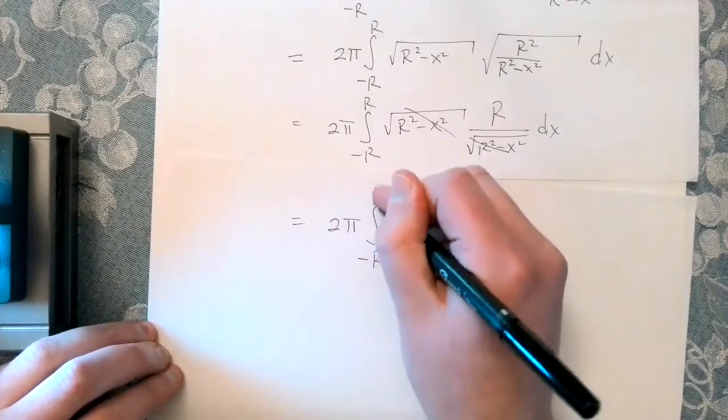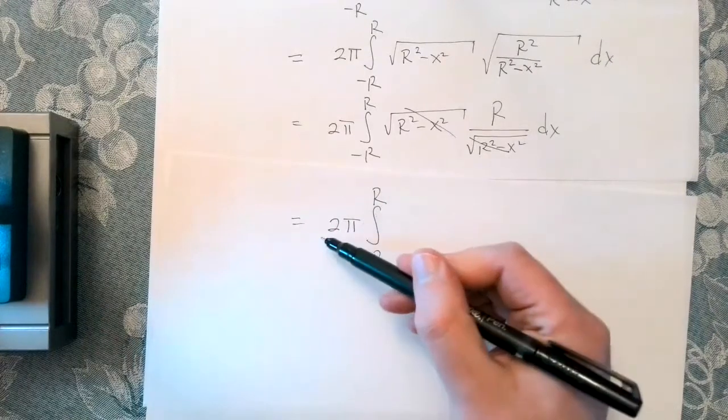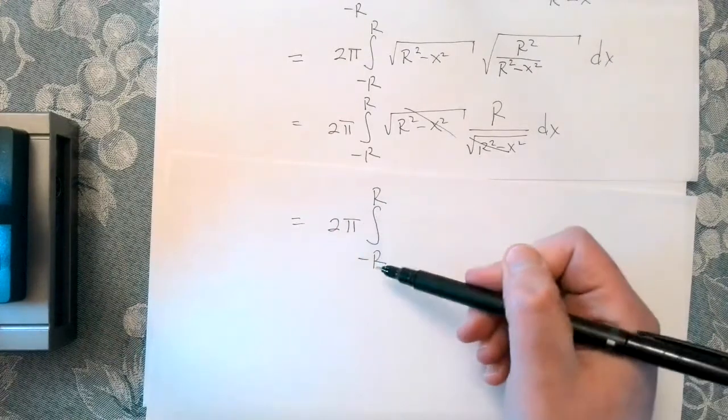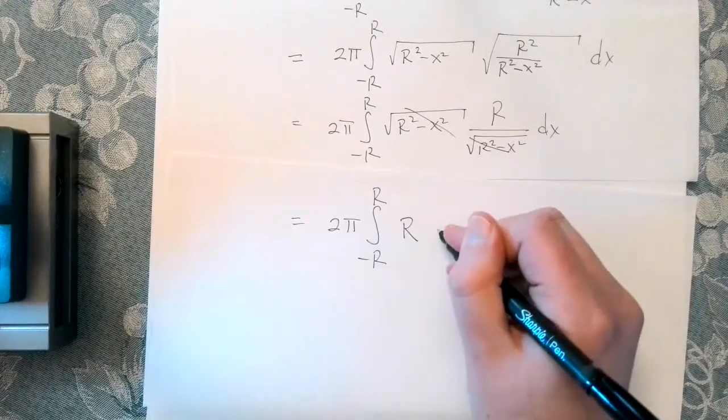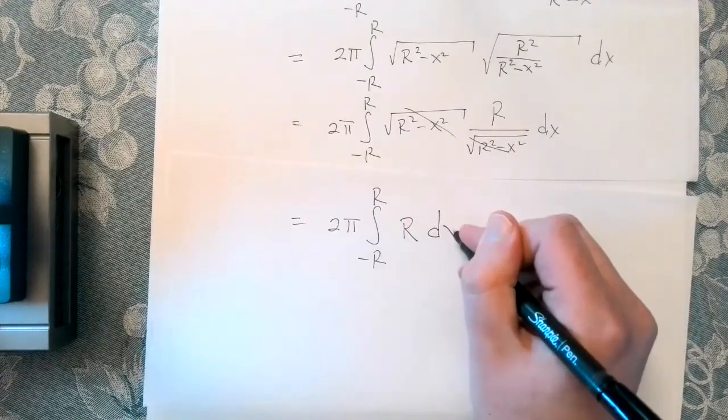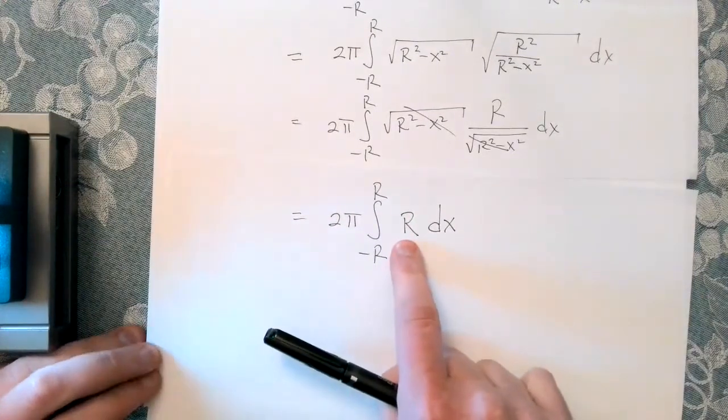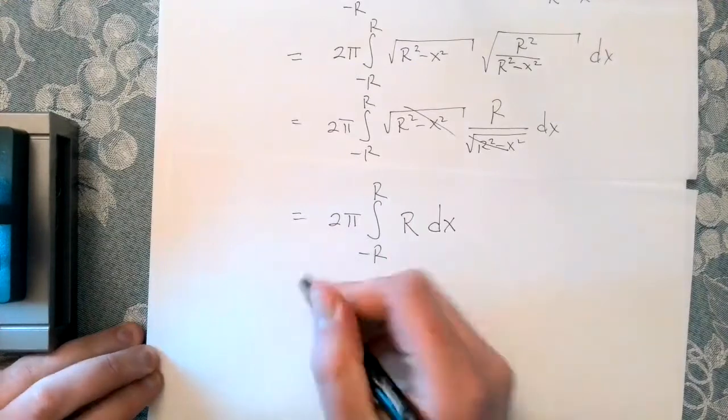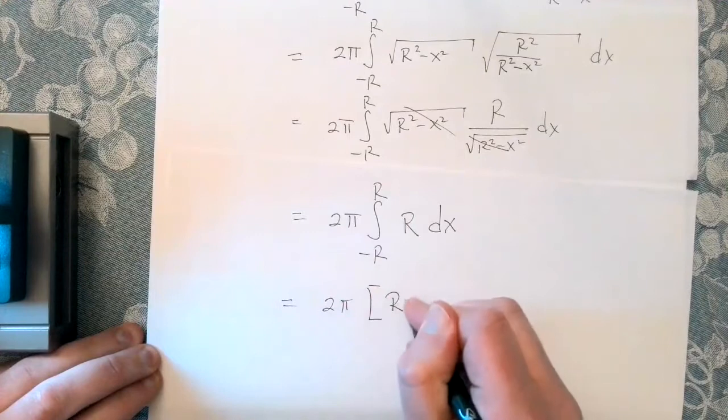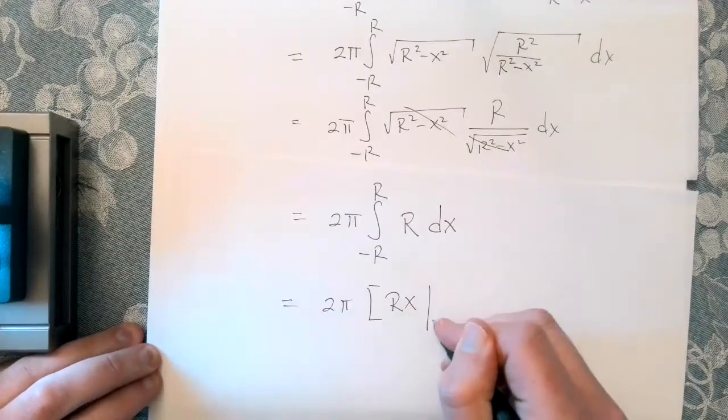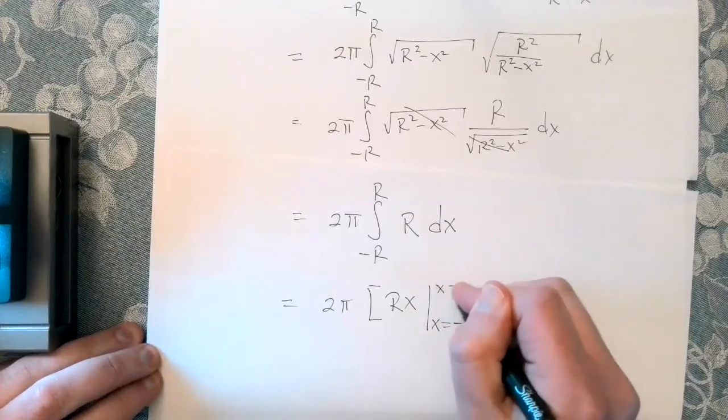Now you could have used the fact that there was y axis symmetry to write your integral as two times the integral from zero to r. And that would have been just fine. I'm going to choose not to, but it's fine if you do. So the antiderivative of this constant r in respect to x. That should be r times x. We're integrating from x, I'm going to write this for emphasis, from x equals minus r to x equals r.